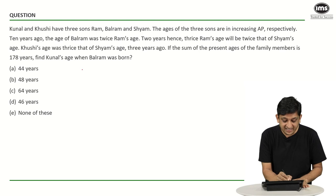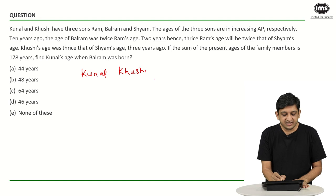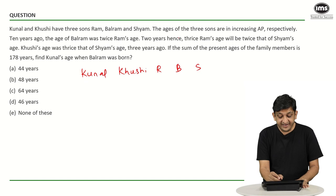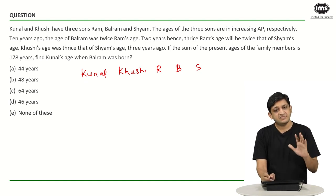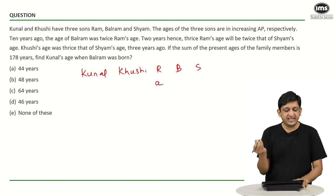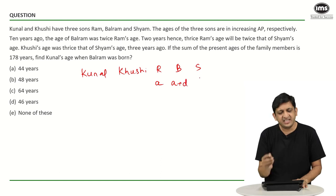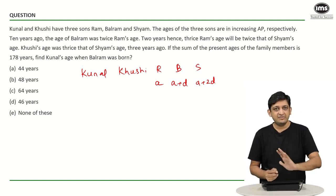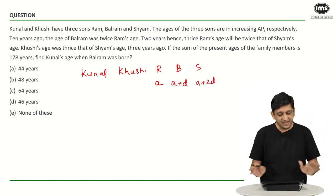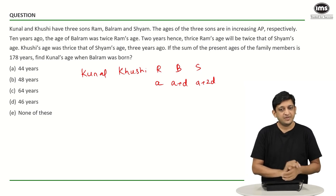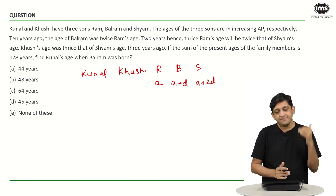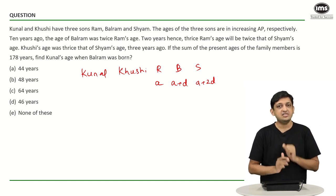The ages of the three sons are in an increasing AP. For simplicity, let Ram's age be A years, Balram's age be A plus D years, and Shyam's age be A plus 2D years. We are told that 10 years ago, the age of Balram was twice Ram's age. Balram's age 10 years ago was A plus D minus 10, and Ram's age 10 years ago was A minus 10. So: A plus D minus 10 equals 2A minus 20.